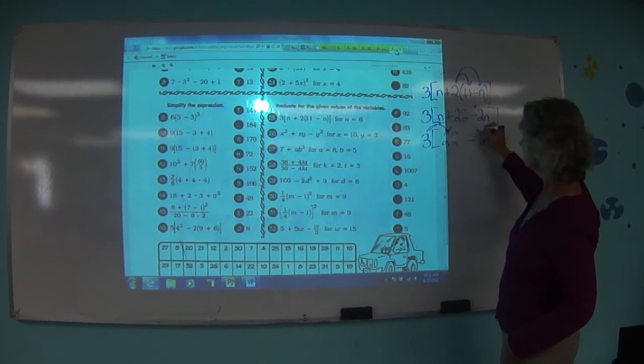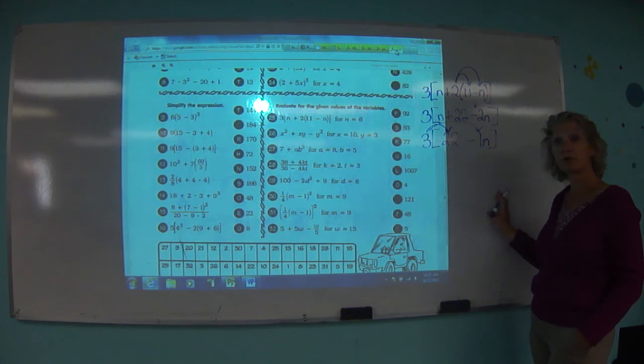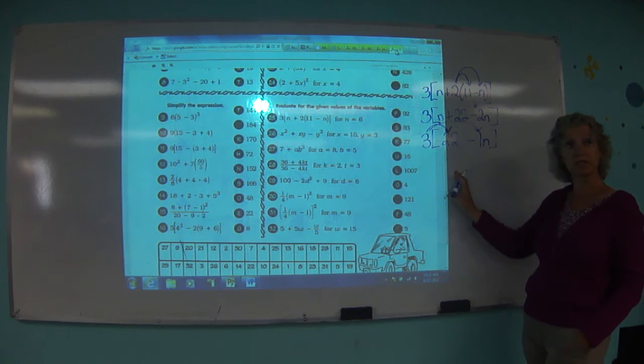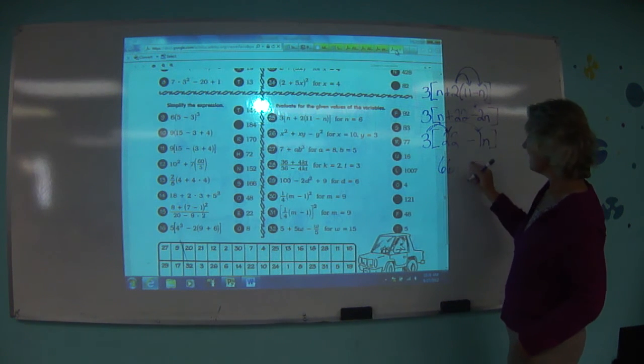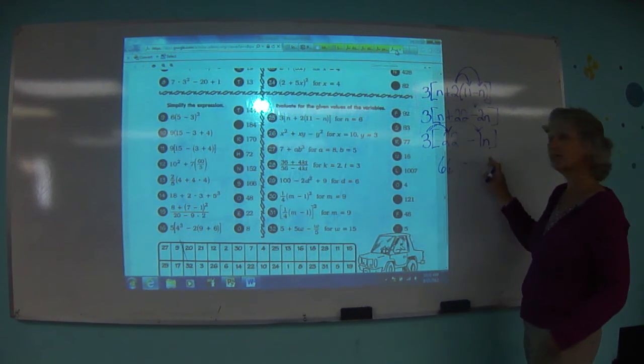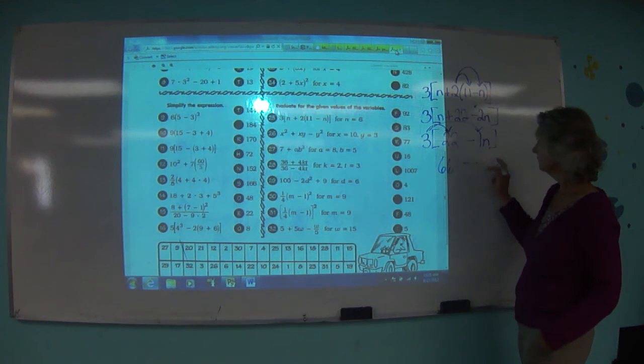3 times 22, 3 times negative 1n. What's 3 times 22? 66. Same operation. 3 times negative 1n? Negative 3n.